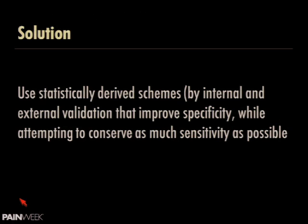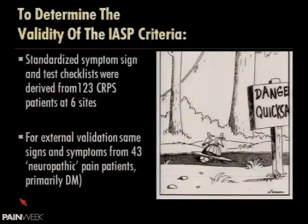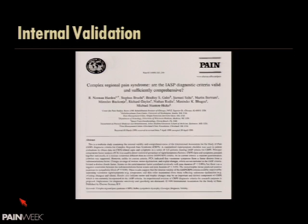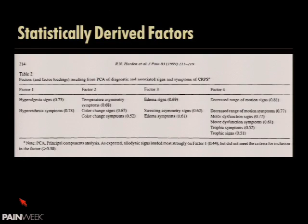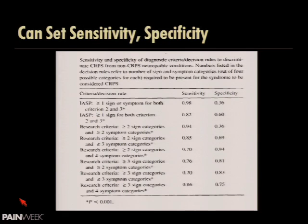Four specific factors emerged: pain, vasomotor disturbance, sudomotor disturbance and edema, and motor/trophic changes — statistically, dystrophic changes locked up with motor changes. Because of these statistics, you can set both sensitivity and specificity. Remember, the IASP criteria was essentially 100% sensitive but only 0.4 specific. We thought we would set criteria with higher specificity, and we did. This is now called the Budapest criteria, revalidated in 2010 in the journal Pain.